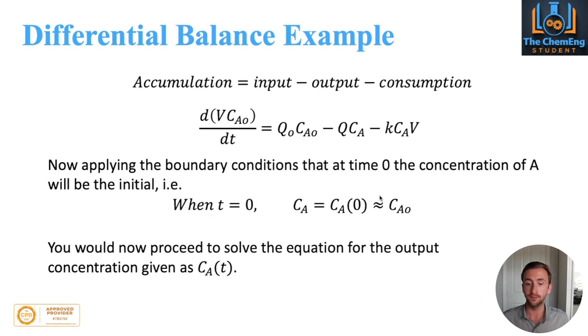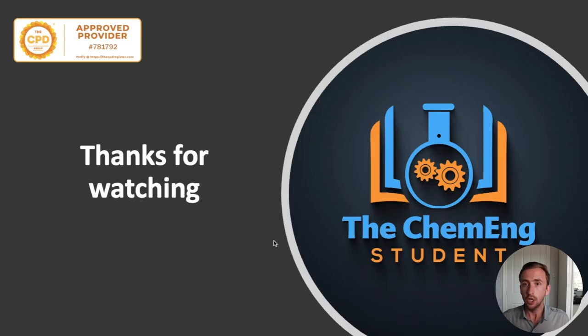What you could now do is proceed to solve the equation for the output concentration given as C_A(t), i.e. what is the final concentration for any given time parameter. That is basically the differential balance for a transient process.